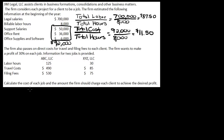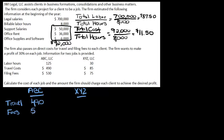So let's lay out ABC and XYZ. We'll put down travel first, and fees. Travel for ABC is $490 and fees are $530. For XYZ, we've got $85 and $75.